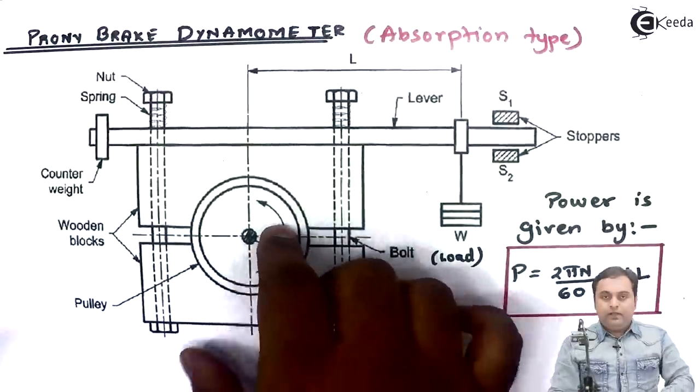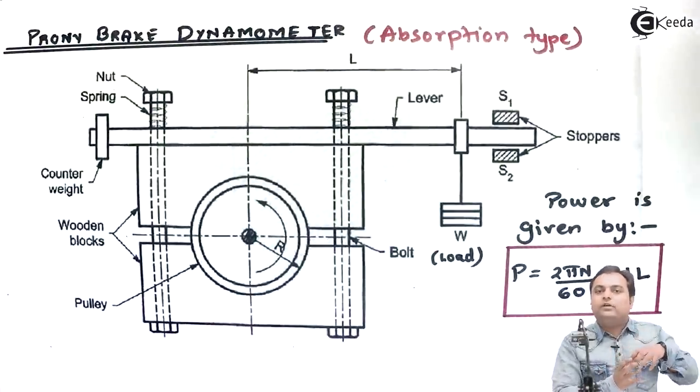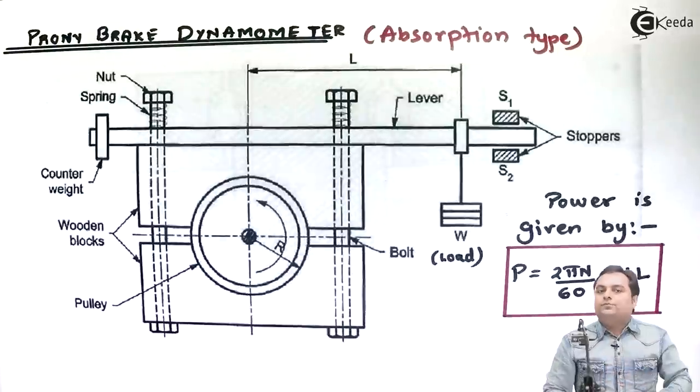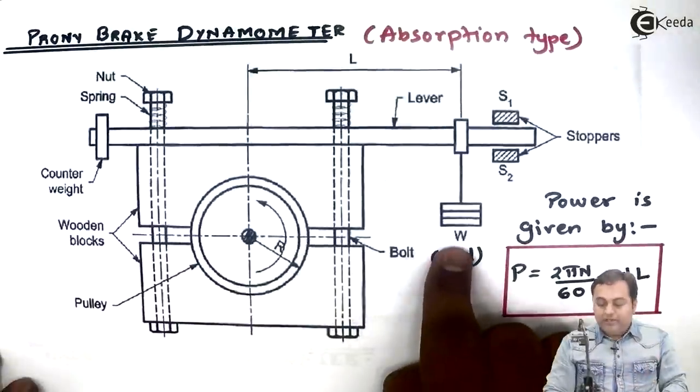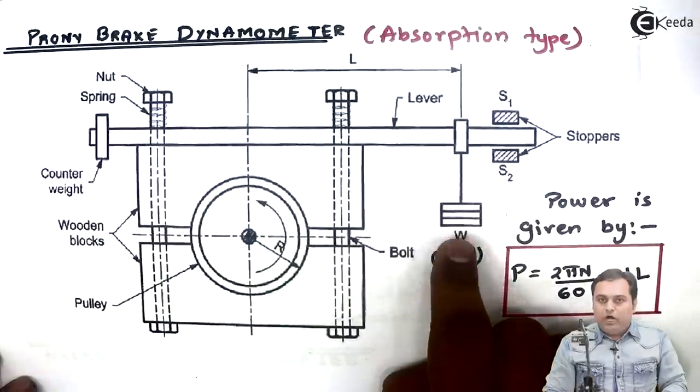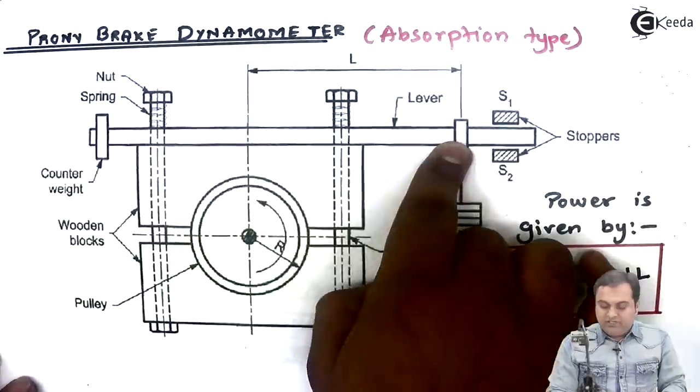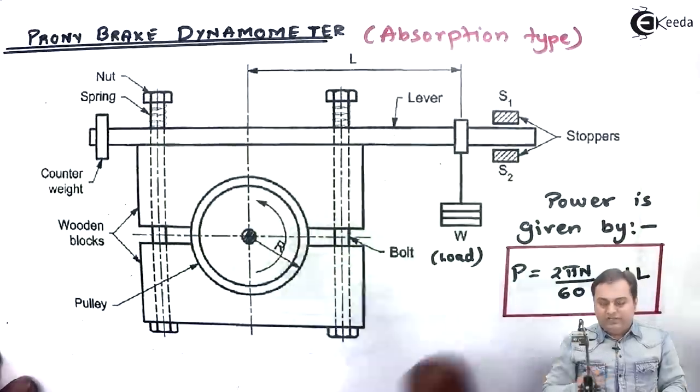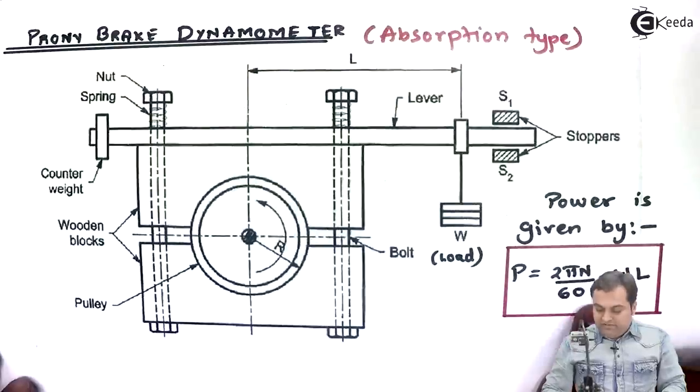When the brake drum stops, at that time we will be noting the value of W - how much is the load - and what is the length of this lever.